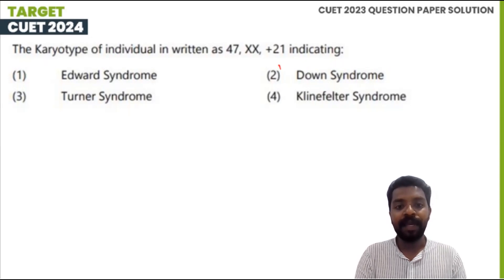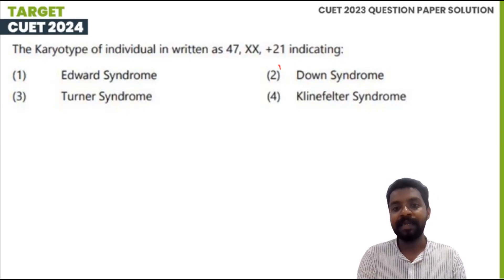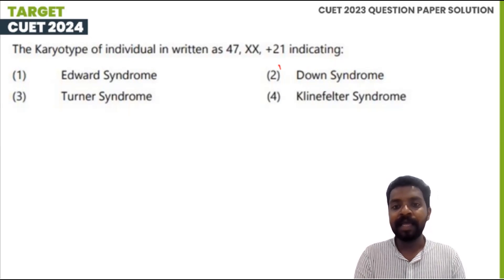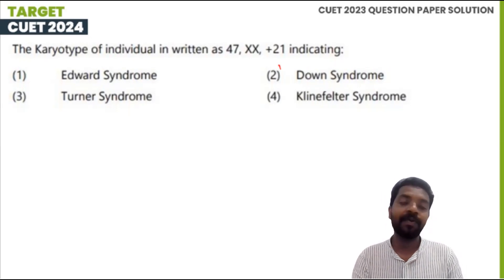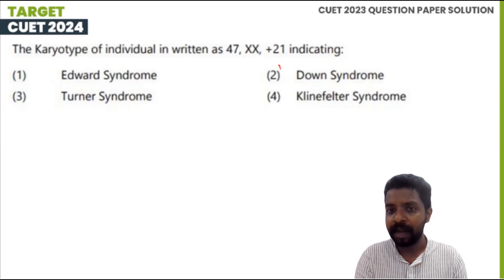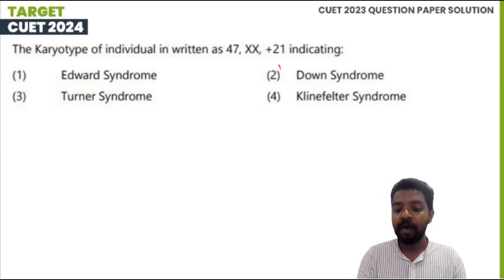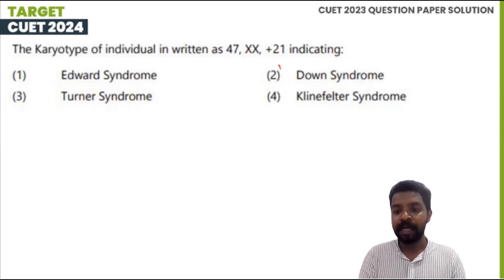The karyotype of an individual is written as 47,XX+21. So, indicating that 47,XX is in the case of chromosome 21. It means there is one extra chromosome 21, which adds a total of 47 chromosomes. The sex chromosomes are normal.